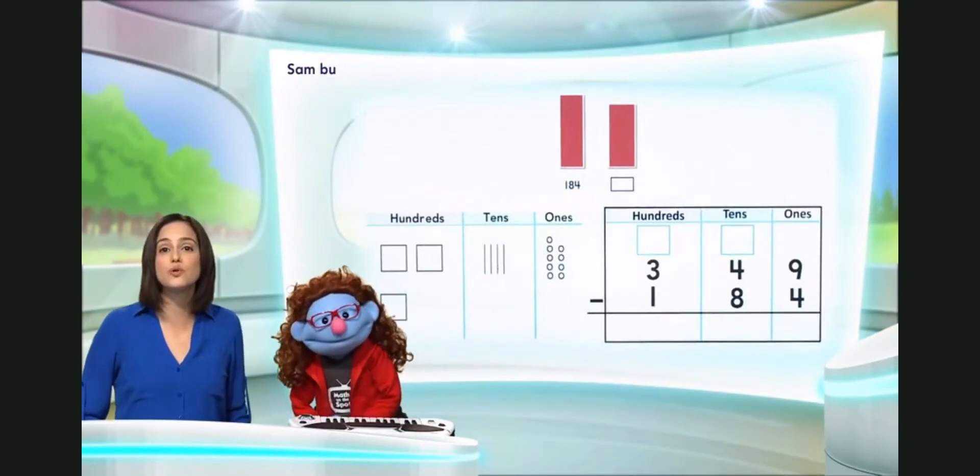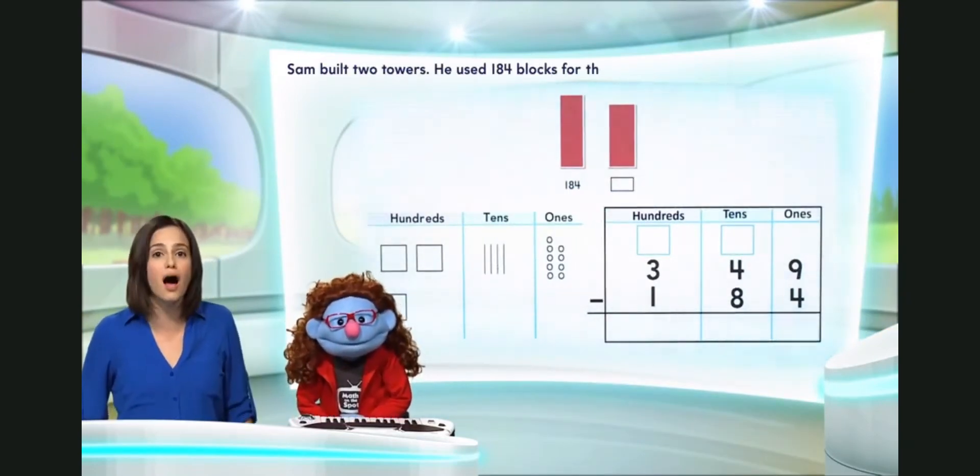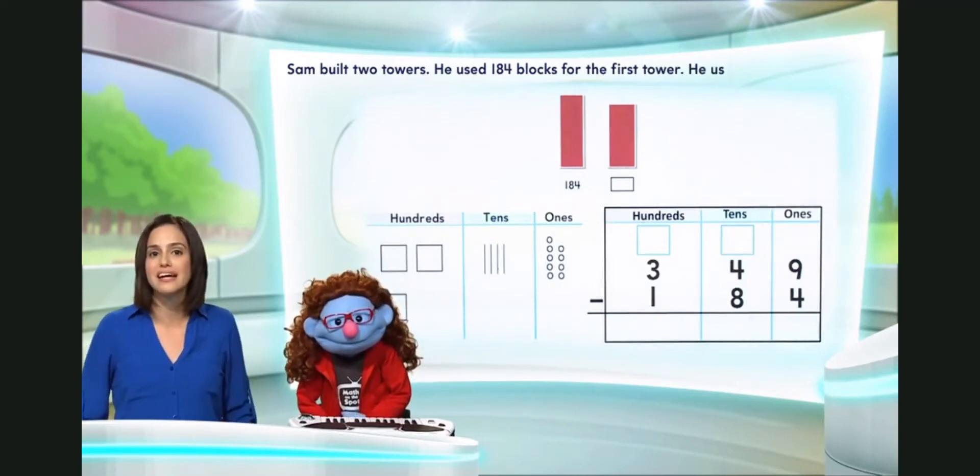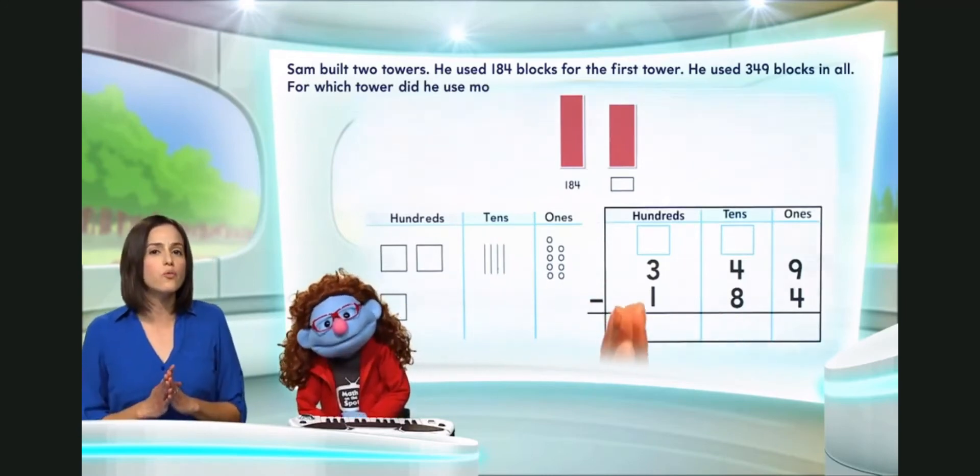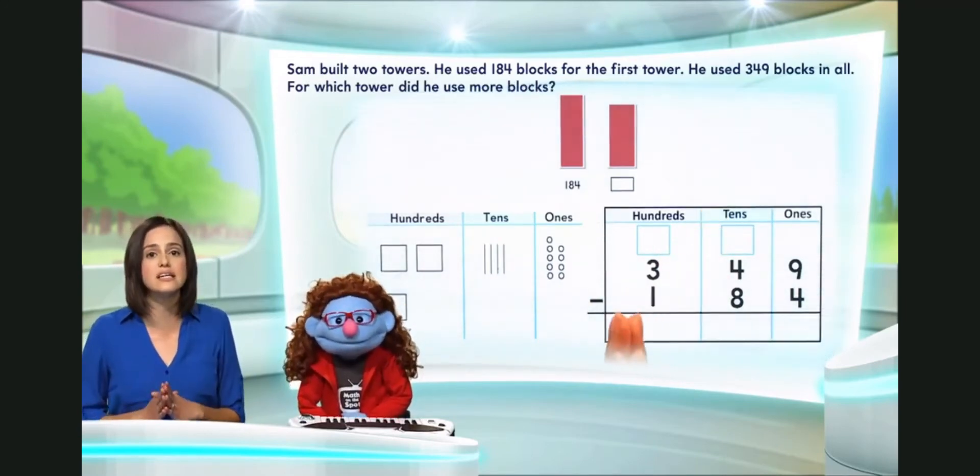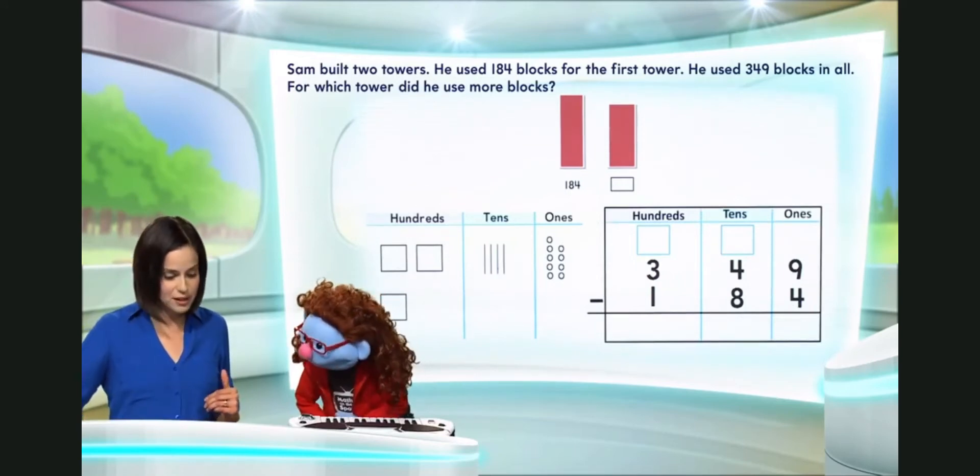Sam built two towers. He used 184 blocks for the first tower. He used 349 blocks in all. For which tower did he use more blocks? Not sure.